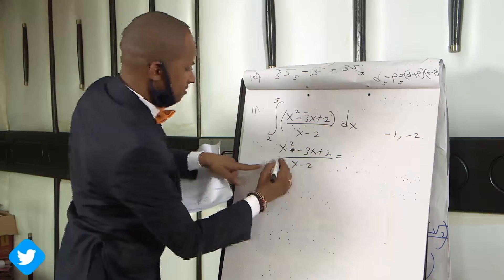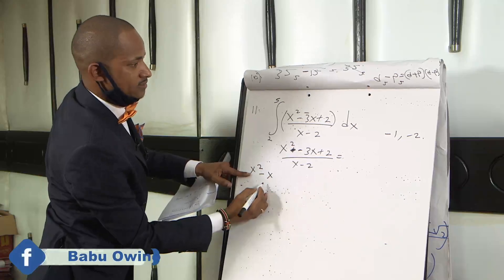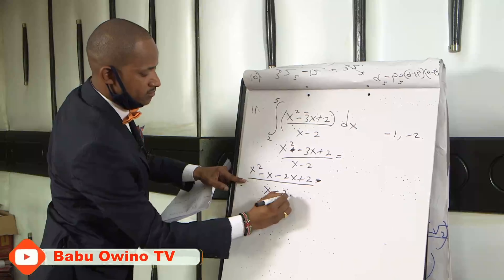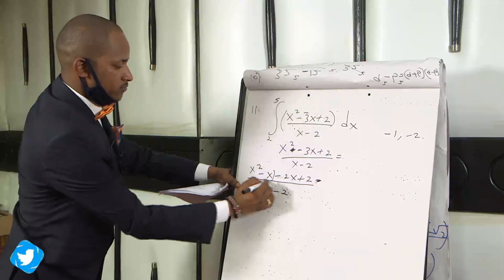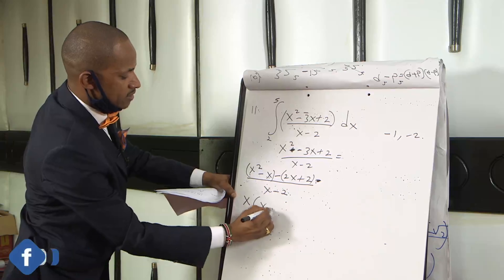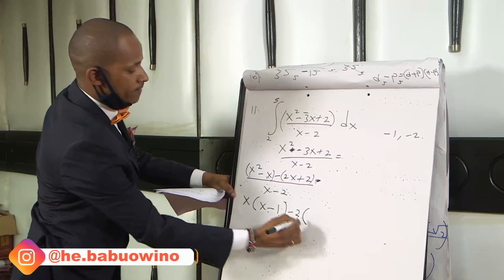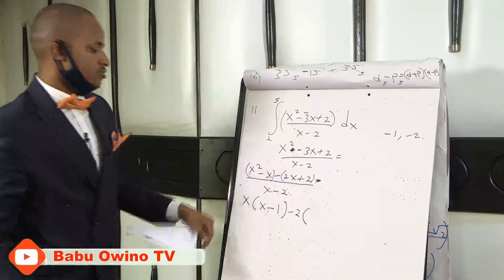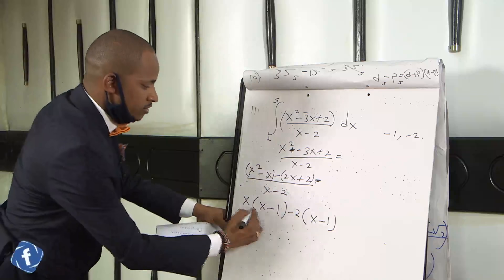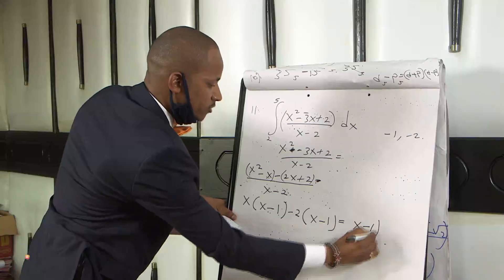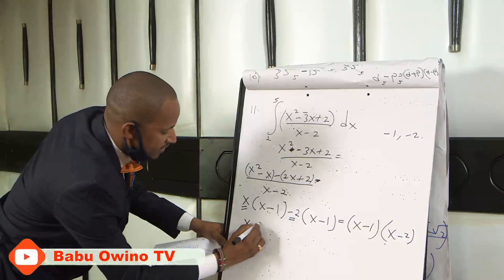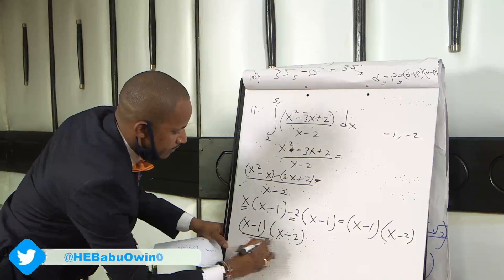So from here we expand it to x squared minus x minus 2x plus 2, divided by x minus 2. When you collect from both sides, you find that what is common here is x: x into x squared goes x times, minus x goes once. What is common here is 2: minus 2 goes into minus 2x how many times? x times. Then minus 2 goes into plus 2 minus 1. What is common to these two is x minus 1 into x minus 2. So we have our equation simplified as x minus 1 into x minus 2 divided by x minus 2.